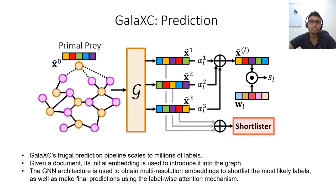At prediction time, approximate nearest neighbor search on the init embeddings A0 is used to introduce the novel test document in the graph. The GNN architecture is used to obtain the multi-resolution embeddings of documents and labels. As before, an average of these embeddings for documents and labels give us the graph embeddings. The graph embedding of the test document is queried from an approximate nearest neighbor search index built on the label graph embeddings. This shortlist of say 500 most likely labels is then re-ranked using the label-wise attention mechanism and label classifier to make the final predictions.